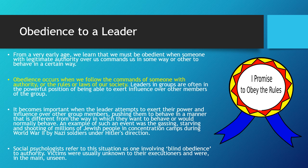An example of this was the gassing, starving and shooting of millions of Jewish people in concentration camps during World War II by Nazi soldiers under Hitler's direction. A lot of the people interviewed afterwards said that they didn't want to do it, but because their commanding officer told them that they must, they had to. This is known as blind obedience to authority.